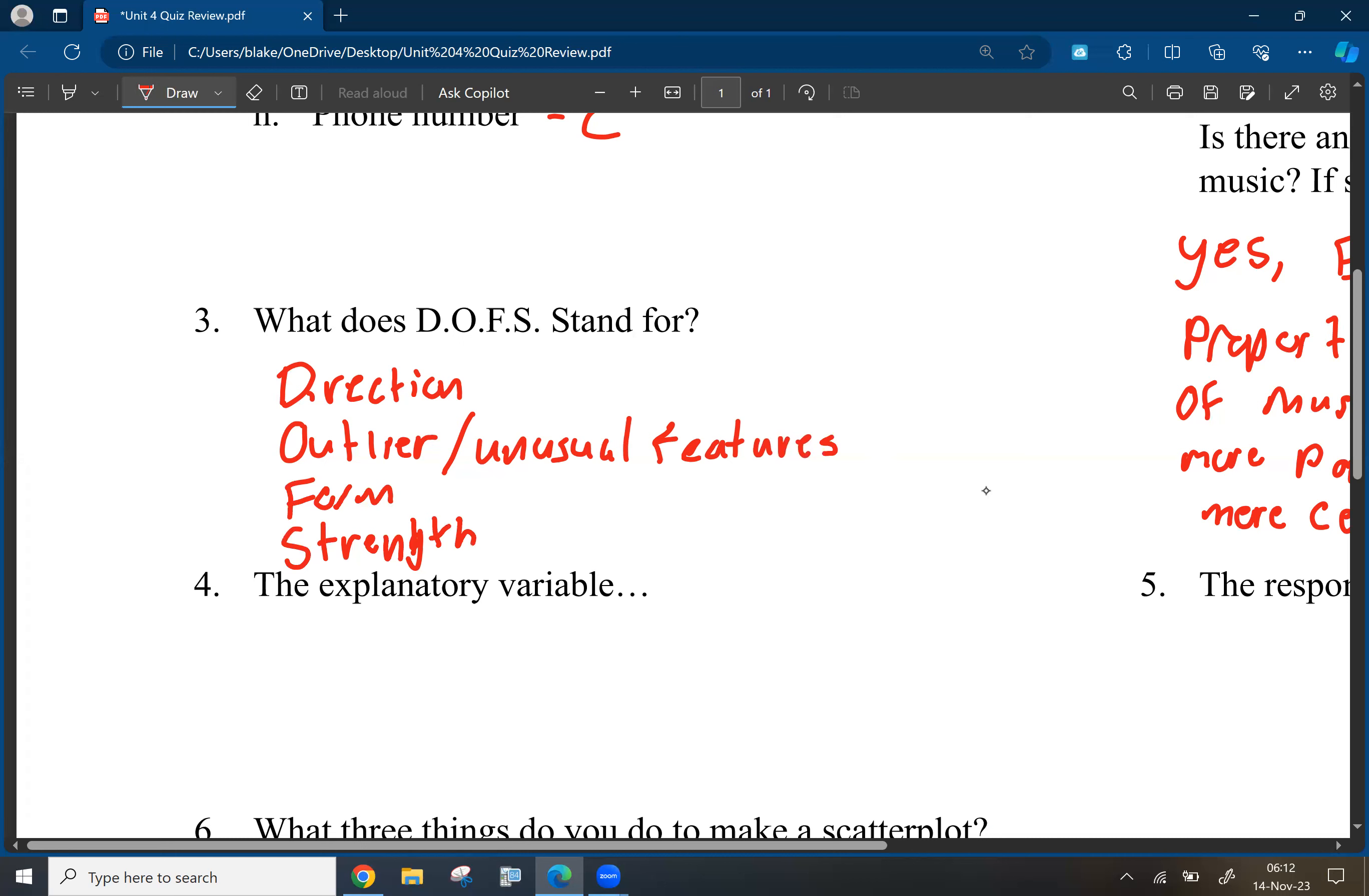All right, so number four, the explanatory variable. I know the explanatory variable is the variable that predicts the response variable, but let me give me one second. I want to pull up the exact wording for this answer. So just give me a moment. Because I think that's basically what it is. I think it's just the variable that predicts the response. But let me review it and find out for sure. Yeah.